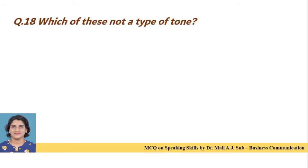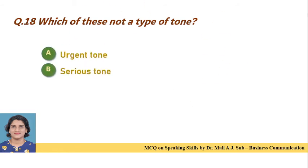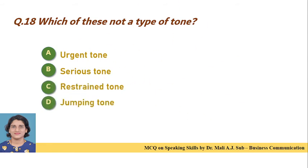Question 18: Which of these is not a type of tone? Option A: urgent tone. Option B: serious tone. Option C: restraint tone. Option D: jumping tone. Correct answer is Option D — jumping tone is not a type of tone.